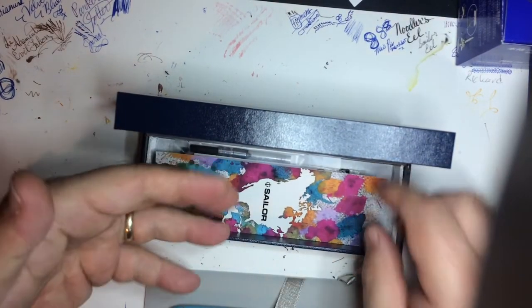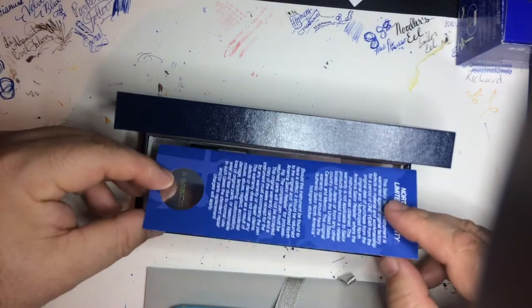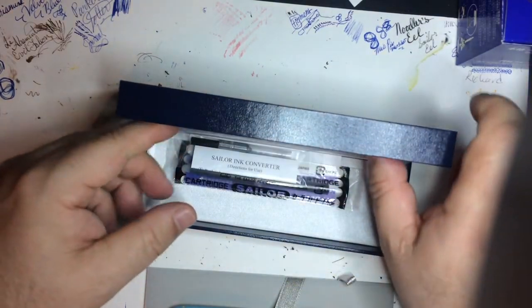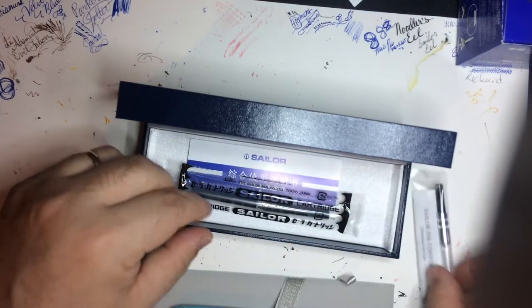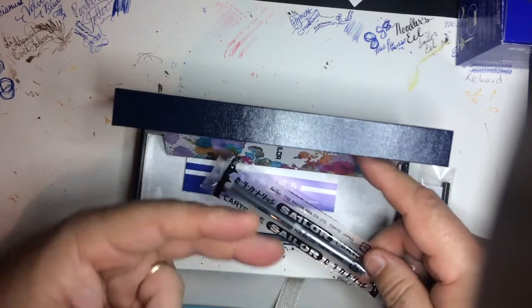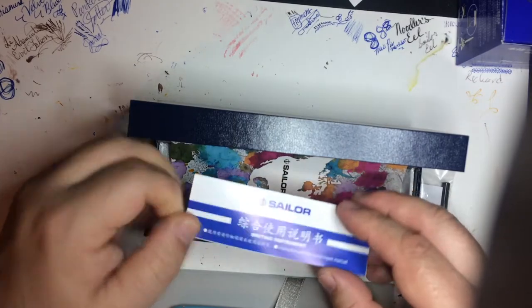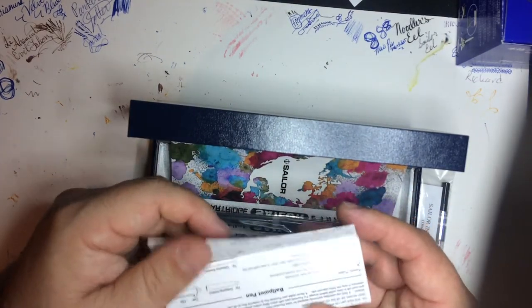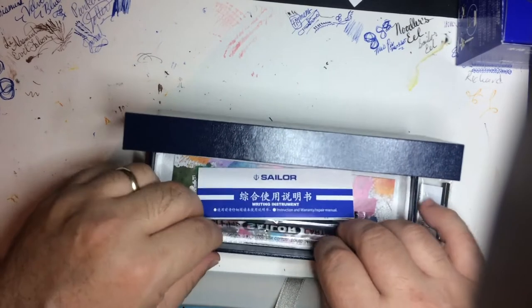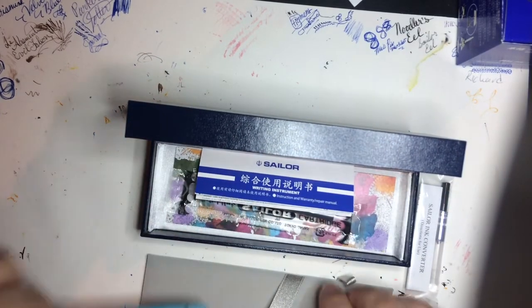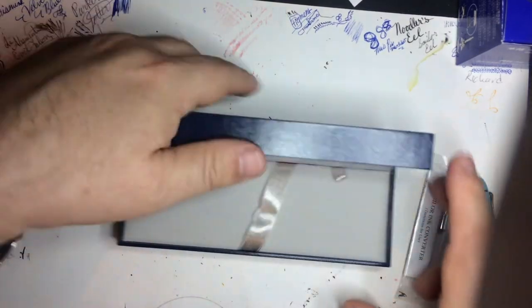And here's another surprise. Normally the card, the authentication card with a little hologram, is usually underneath the piston converter and we also have the two ink cartridges. These are proprietary to Sailor. The Sailor instruction booklet on how to use a fountain pen if you're new to fountain pens. You can look at those instructions and we can put this stuff aside and deal with it later.